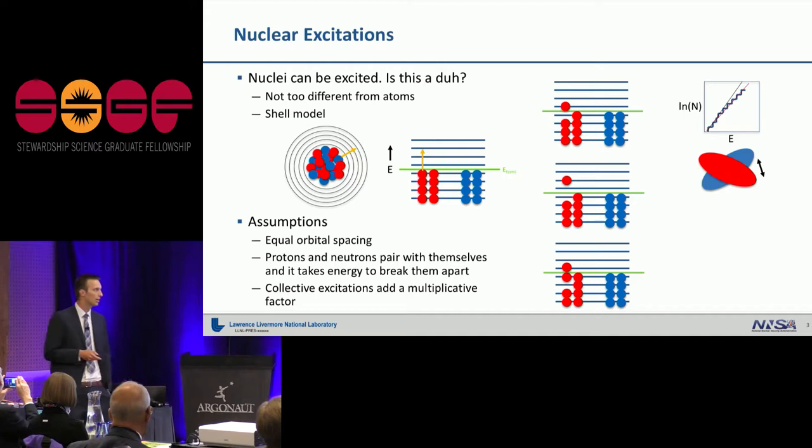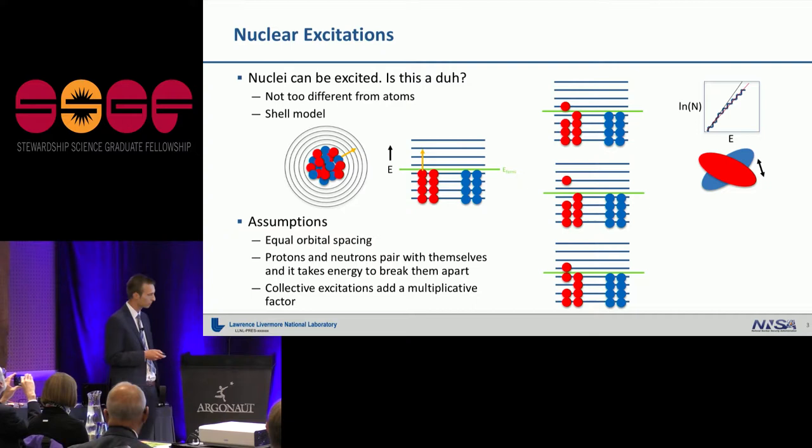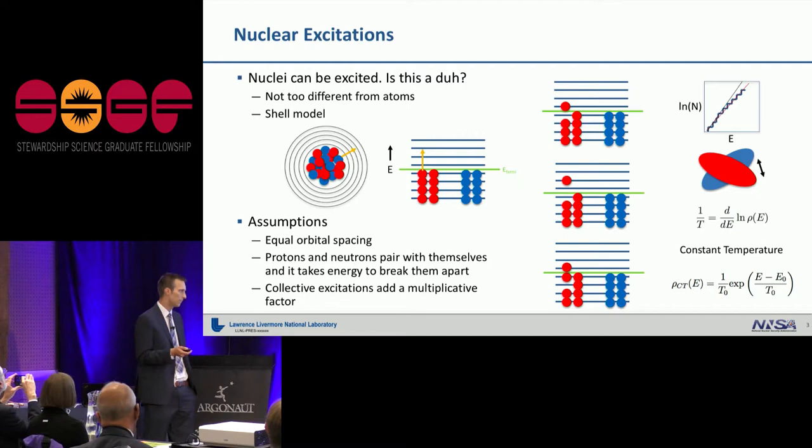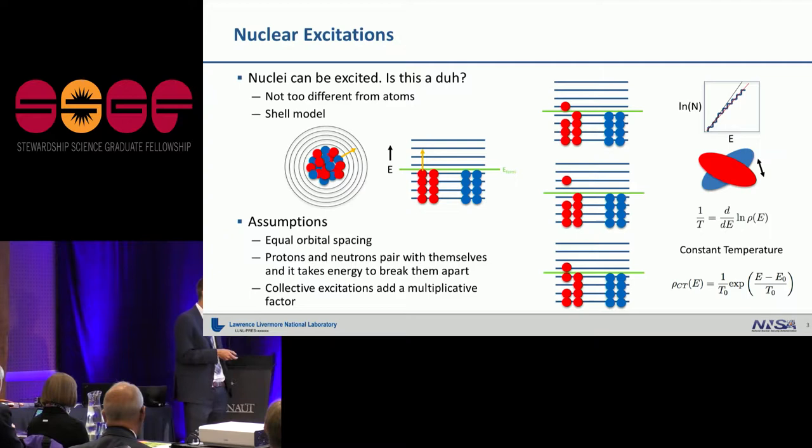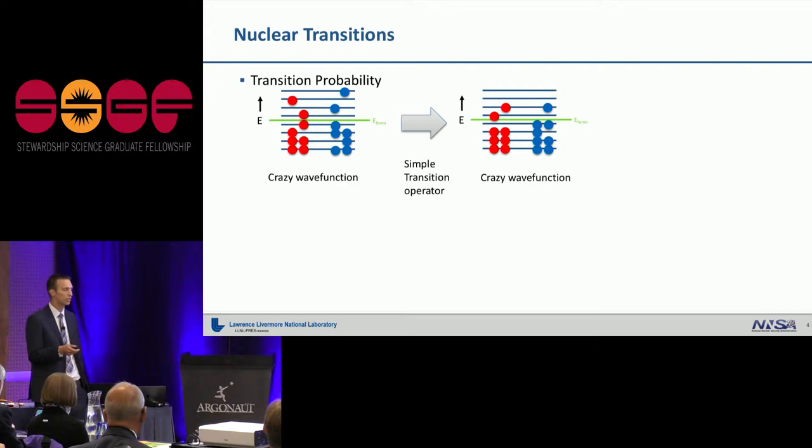We tack on one additional assumption that you might have collective excitations of the nuclear matter in which the proton and neutron clouds oscillate about one another. So this just adds some simple multiplicative factor. On top of all of these excited states, you might have some collective motion within the nucleus. So we call this a constant temperature model, and the thermodynamic definition of temperature is just the energy derivative of a logarithmic level density. So one of our simplest models just says that this is a straight line.